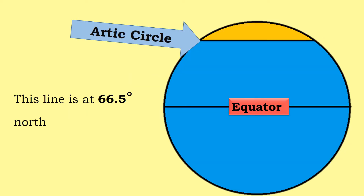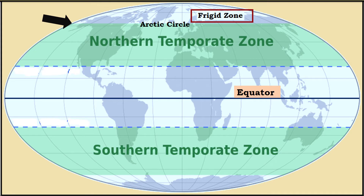North of the equator, close to the North Pole, we will find the Arctic Circle. This line circles the Earth at 66.5 degrees north. It separates the North Frigid Zone from the North Temperate Zone.